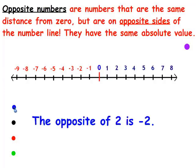The opposite of 2 is negative 2. Let's check that out. Here's 2, and here's negative 2. Are they the same distance from zero? That's 2 away from zero, and that's 2 away from zero. So yes, they have the same absolute value — they're just on opposite sides of zero. One's on the positive side and one's on the negative side.